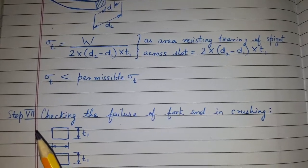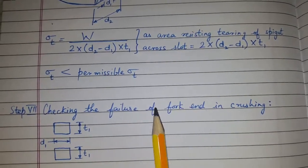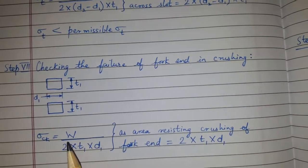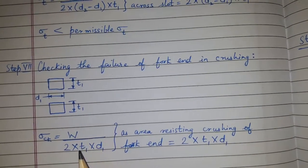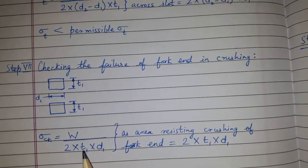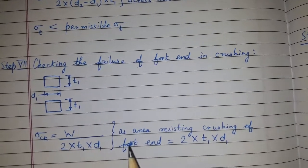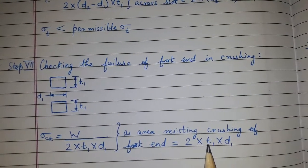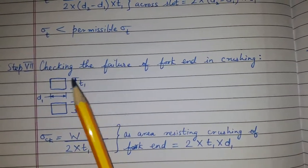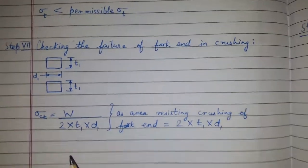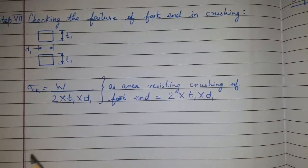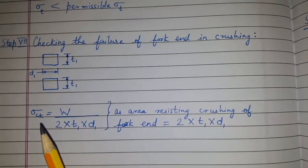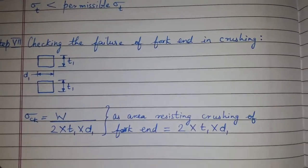Step 7: we have to check the failure of the fork end in crushing. Crushing stress is equal to load upon the resisting area. The area resisting crushing of the fork end is equal to 2 × t1 × d. We then check whether this crushing stress is less than the permissible stress.